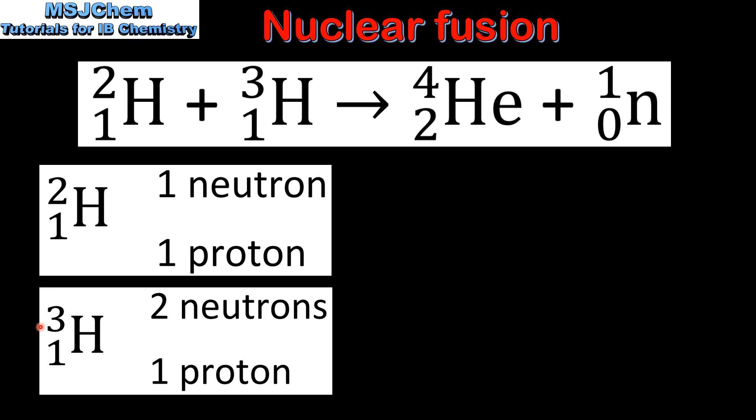Deuterium and tritium are both isotopes of hydrogen. They have the same number of protons but different numbers of neutrons.